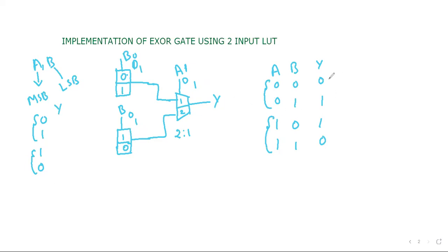So the truth table is satisfied. Like this we can construct an XOR gate with the help of two input LUTs. Thank you all.